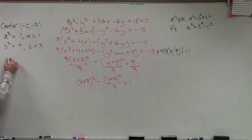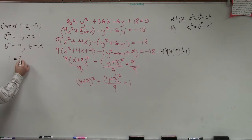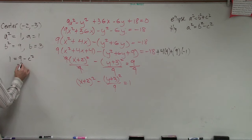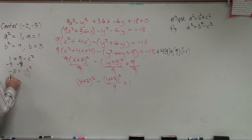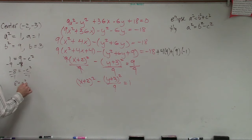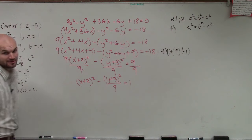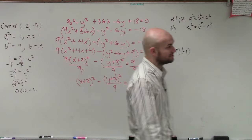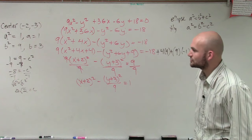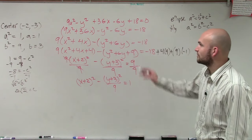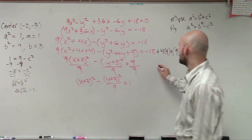So therefore, a squared, which is 1, equals 9 minus c squared. Subtract 9: negative 8 equals negative c squared. Divide by negative 1: 8 equals c squared. Take the square root, and you get 2 square root of 2, which is approximately 2.828. So c equals 2 square root of 2. We have our center at negative 2, negative 3.